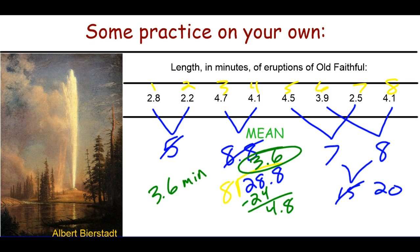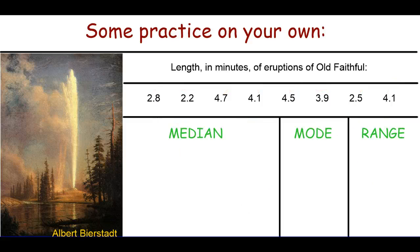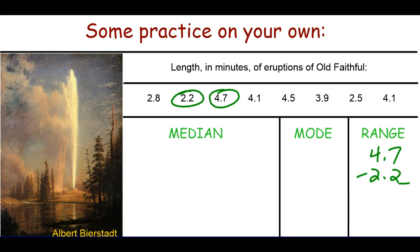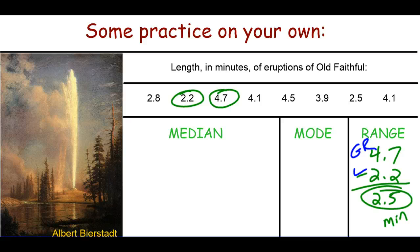For the range: our greatest value is 4.7 and our least value is 2.2, so the range is 2.5 minutes — the difference between the greatest and least values. For the mode, the only data point that appears more than once is 4.1, so our mode is 4.1 minutes.